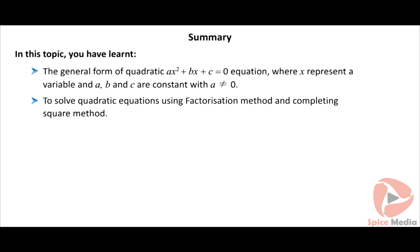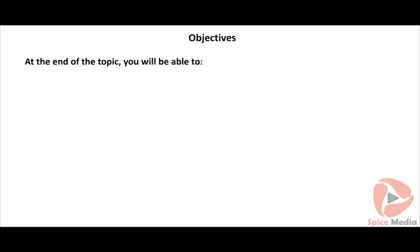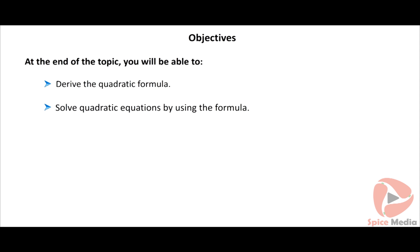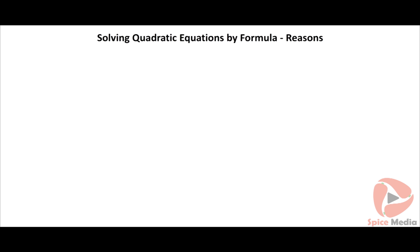In this topic you have learnt the general form of a quadratic equation: ax² + bx + c, where x represents a variable and a, b, and c are constants with a not equal to 0. You have also learnt to solve quadratic equations using the factorization method and the completing square method.